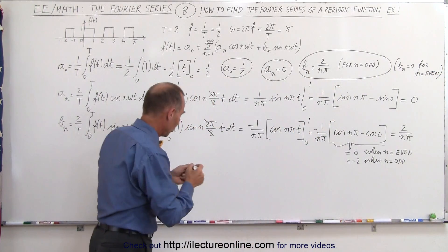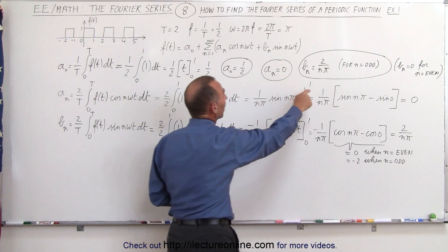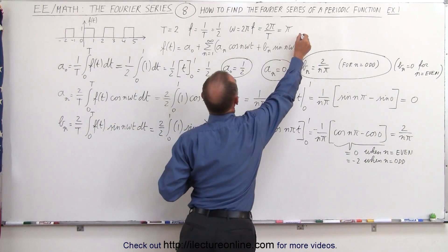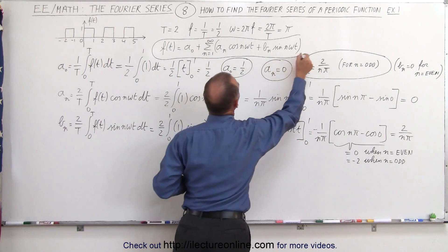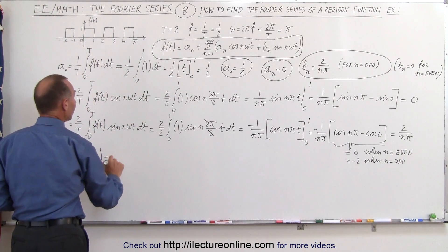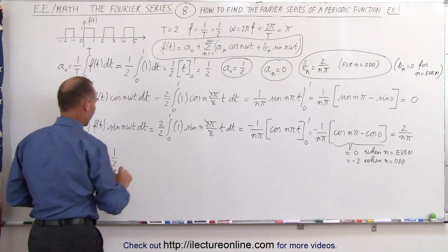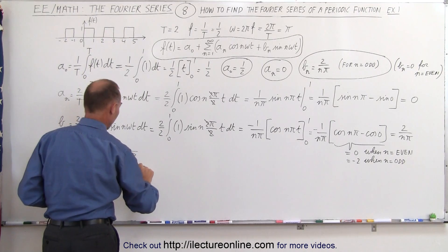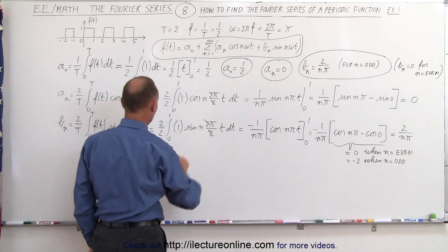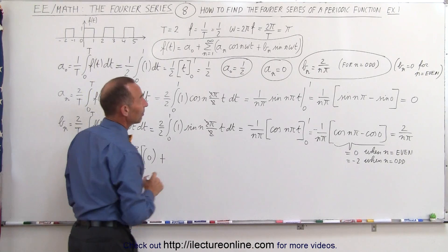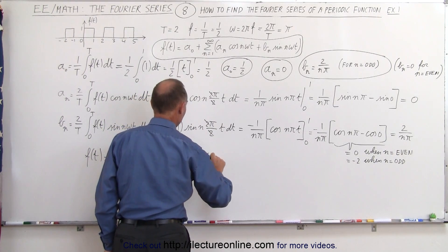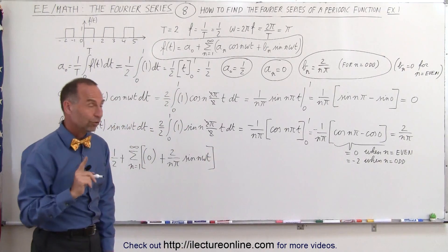Now we've found all the constants: a sub 0 equals 1/2, all a sub n's equal 0, and b sub n equals 2 over n·π only for odd n. Plugging back into the original Fourier series equation, f(t) equals a sub 0 which is 1/2, plus the infinite sum from n=1 to infinity of b sub n times the sine of n·ω·t, where b sub n equals 2 over n·π, valid only for odd n.